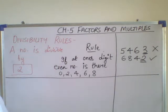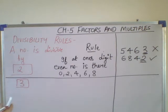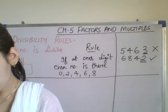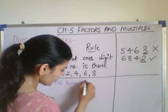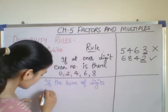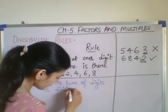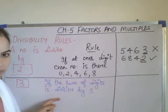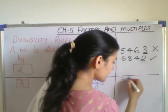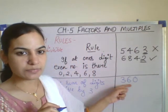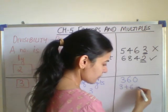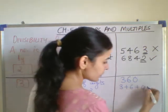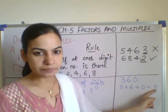Now let us check the divisibility of 3. The rule is: if the sum of the digits is divisible by 3, then the number is divisible by 3. Let us take the example 360. We have to check whether 360 is divisible by 3 or not. We add the digits: 3 plus 6 plus 0 equals 9.